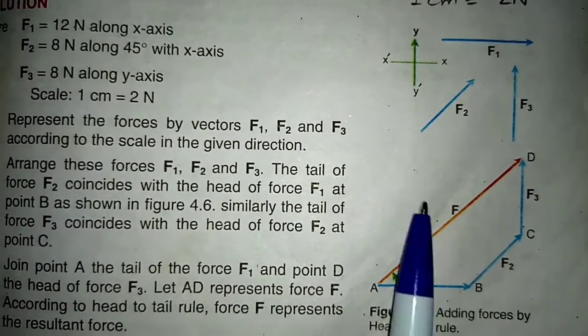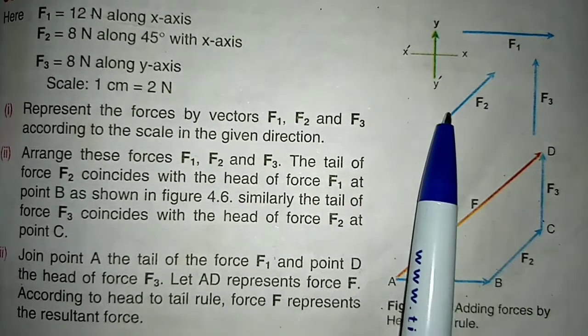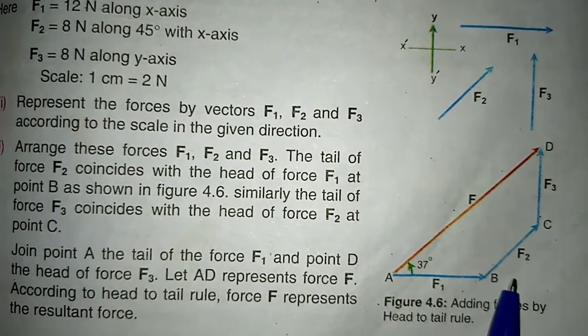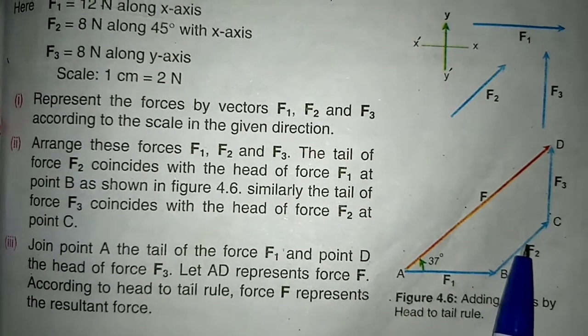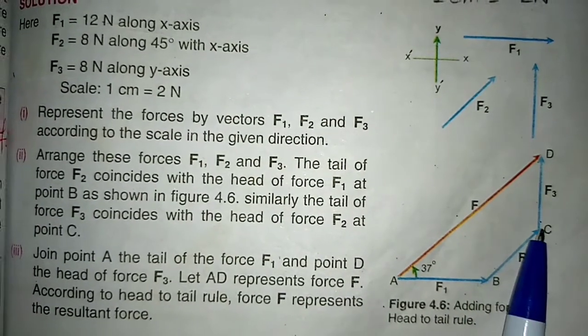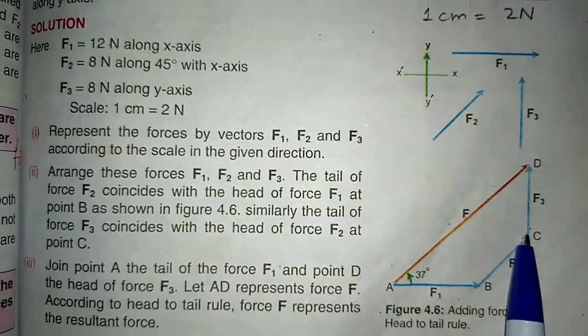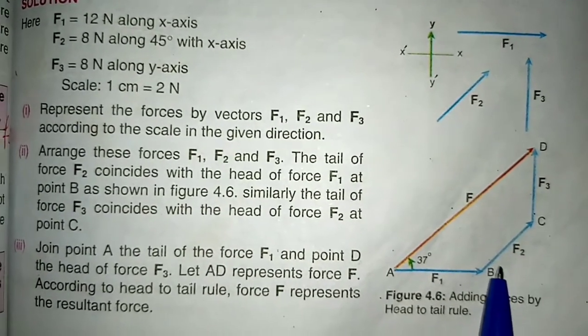After that, we have taken the second vector. There is no change when we translate it. We have matched F2's tail with F1's head. Next, we have taken the vector F3. We have placed F3's tail with F2's head.